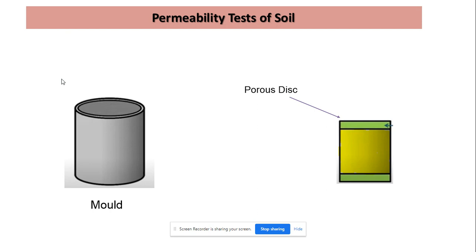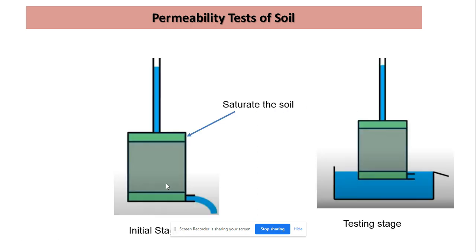After placing or compacting the soil in this mold, we place the porous disc on the upper and lower side of the mold and place this entire assembly into the test assembly where we can perform the test.